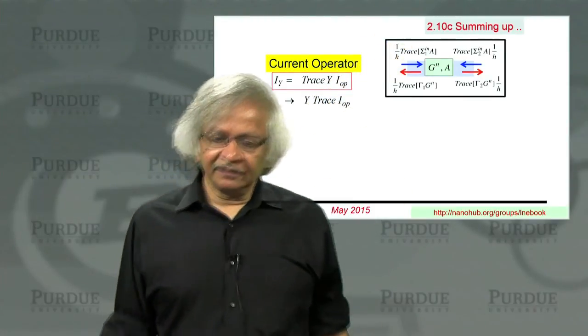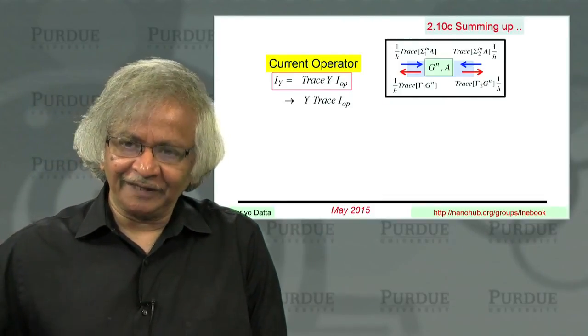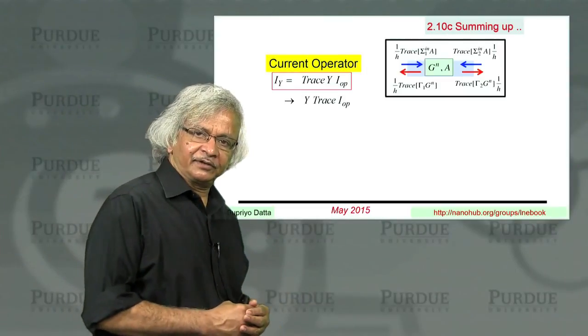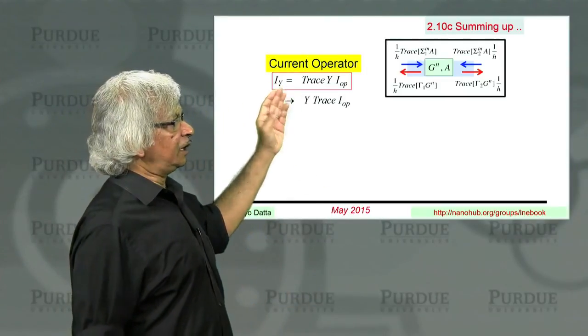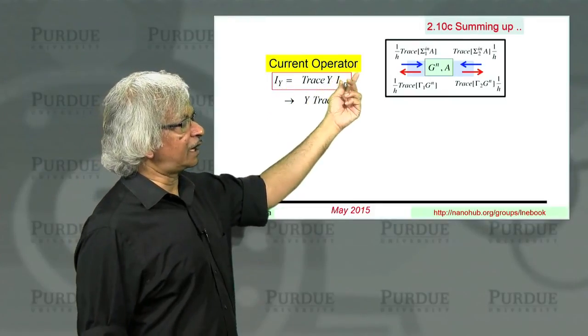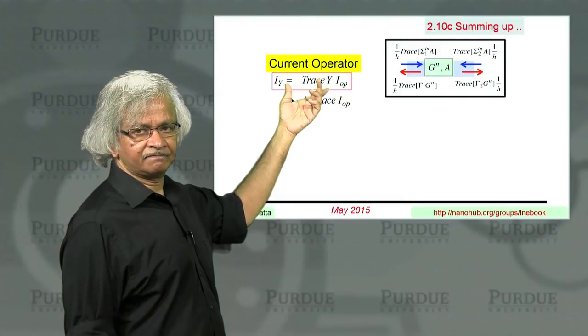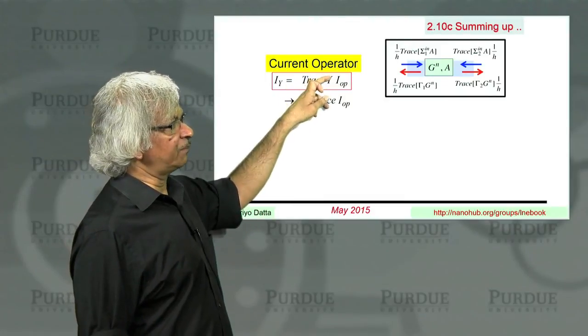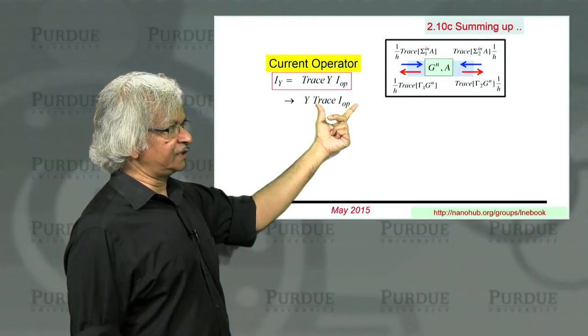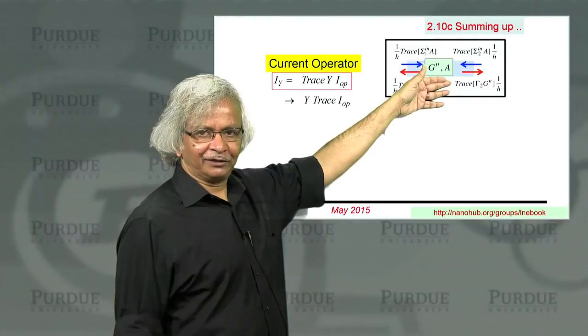On the other hand, you might be interested in the flow of some more complicated quantity like spin, something that itself is represented by a matrix. Let's say y, and you want the current of y. In that case, it would be nice to have a current operator so that you could multiply it by y and take its trace. And of course, if y is not a matrix, just a number, then you could pull out the y and just take the trace of the operator itself.